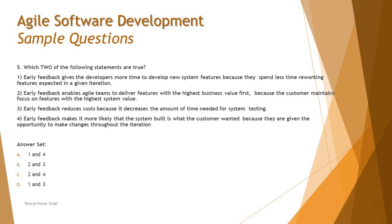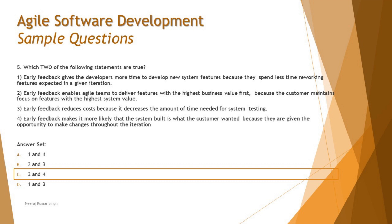Statement four: 'early feedback makes it more likely that the system built is what the customer wanted, because they are given the opportunity to make changes throughout the iterations.' Absolutely true — early feedback is all about interacting with customers, understanding what they want, accepting their feedback and changes, and accommodating their needs and expectations. The customer indicates if requirements are missed or misinterpreted. So the right answer is C — statements two and four.